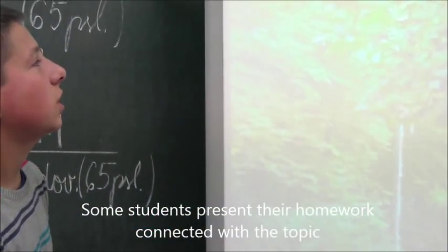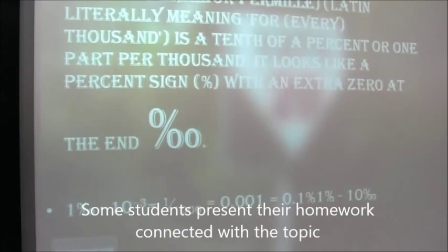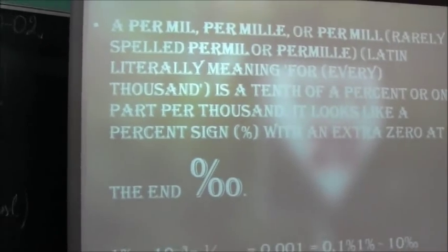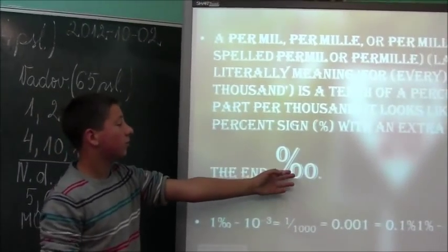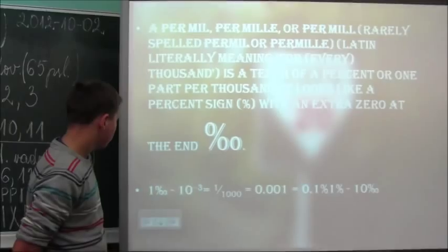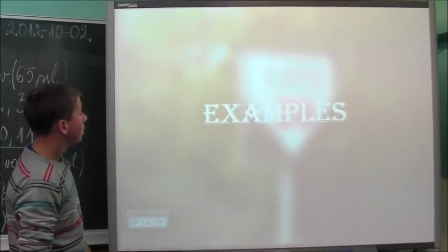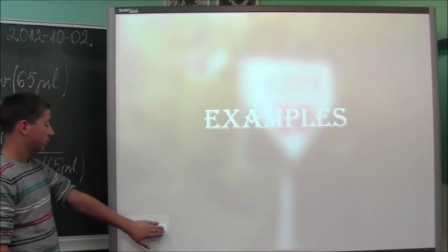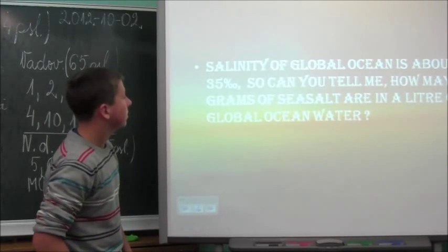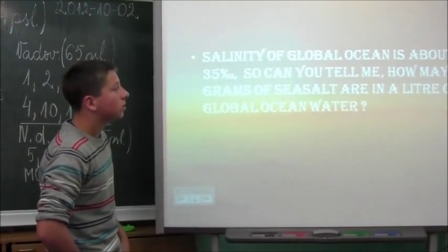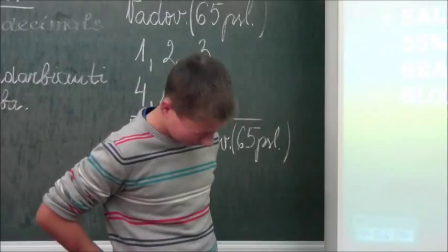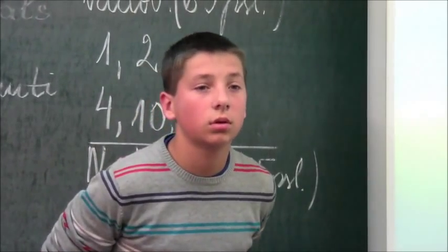Today we'll also be talking about the permille — is it a tenth of a person or one part per thousand? A permille sign looks like a percent sign with an extra zero at the end. So this is the sign of the permille, and that's the standard form you should write. We will see examples of using it. Question for you: the salinity of the global ocean is about 35 permille — so can you tell me how many grams of sea salt are there in one litre of global ocean water?